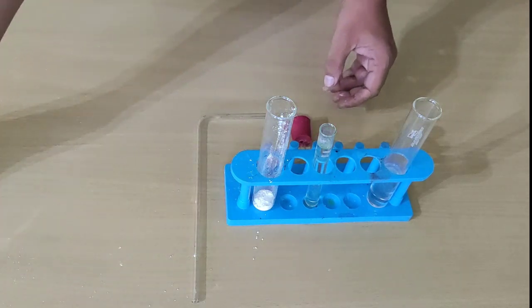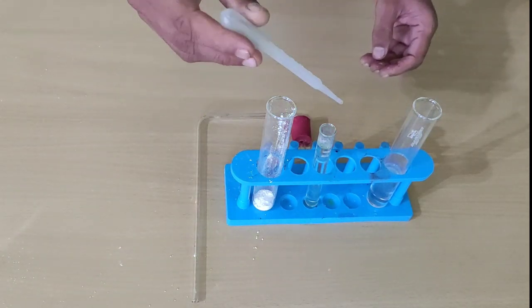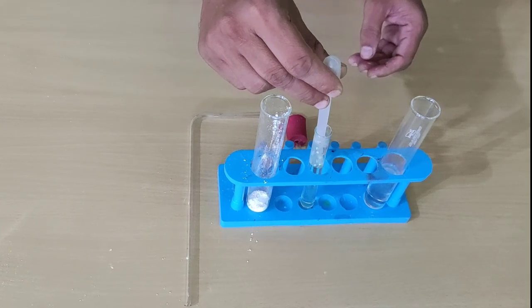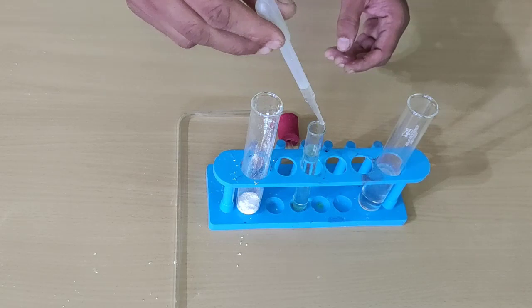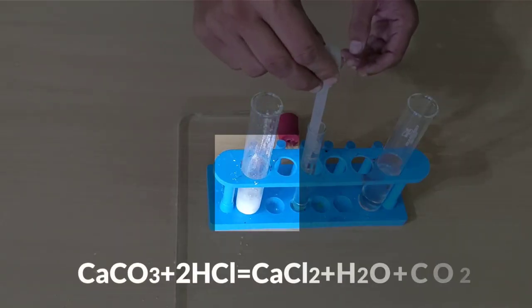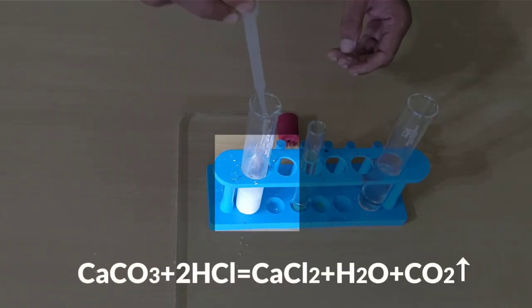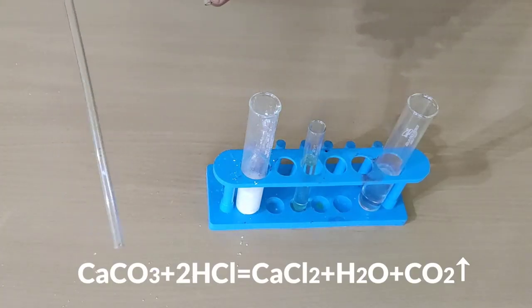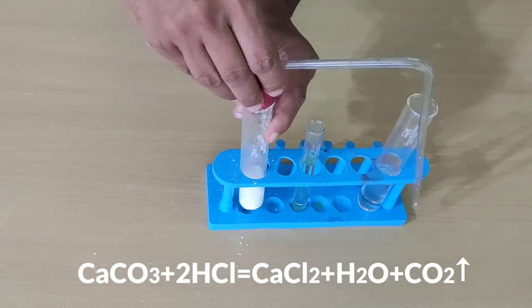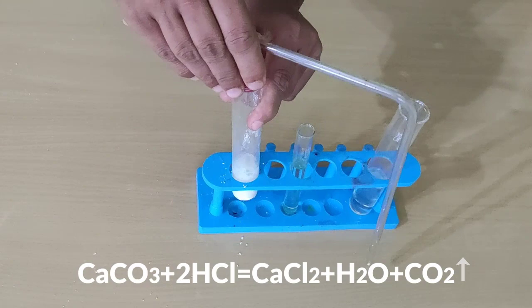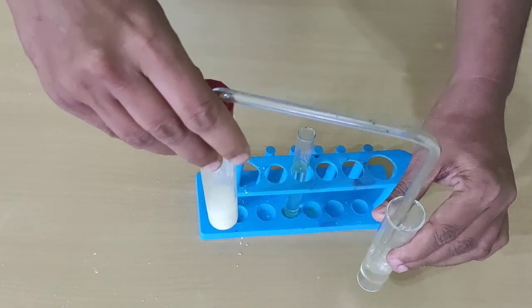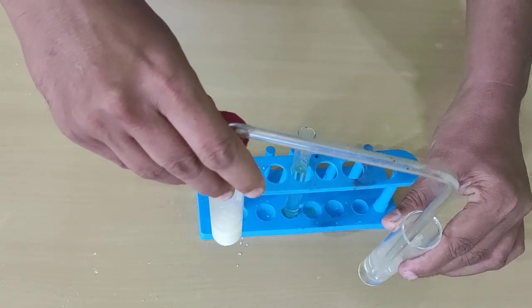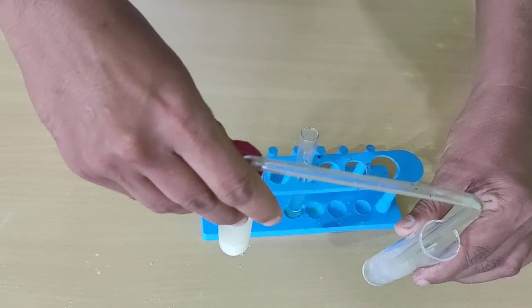Now I will add this dilute hydrochloric acid on this calcium carbonate powder and close its mouth with this rubber cork and put its other end. See the bubbles are coming out in lime water and the color of lime water is changing, it's turning white.